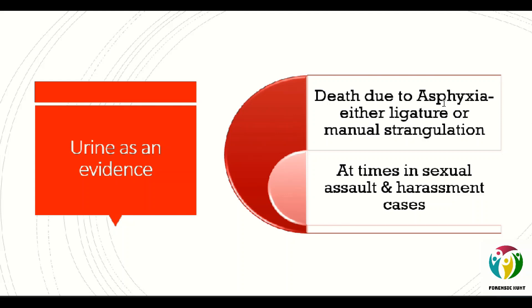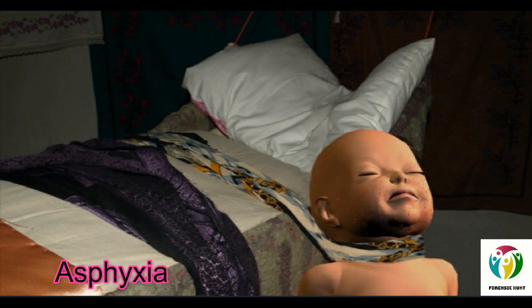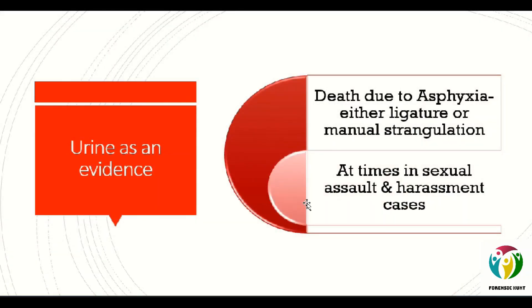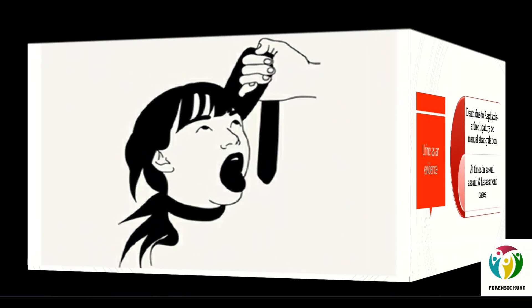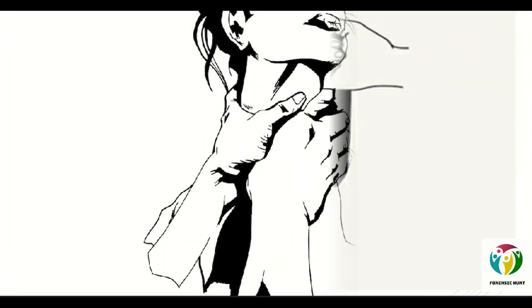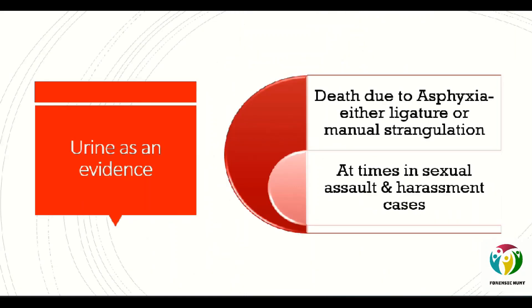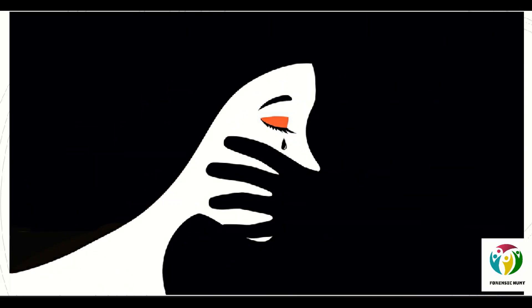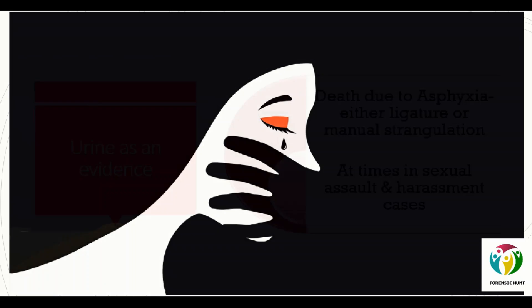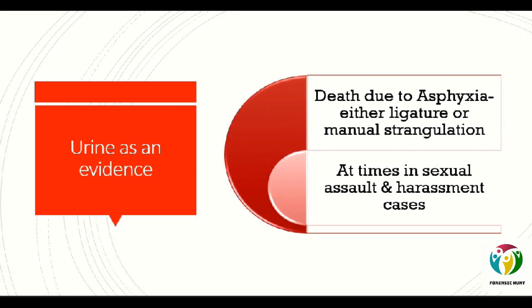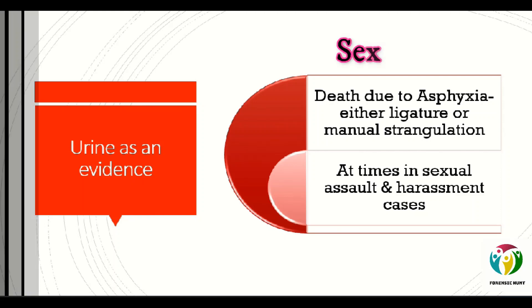Urine could be used as evidence in cases of asphyxial death. Asphyxia or asphyxiation is a condition of deficient supply of oxygen to the body that arises from abnormal breathing. These abnormal breathing conditions could occur in the case of a ligature, as in hanging, or in manual strangulation. The identification of urine stains can aid in the identification of homicides involving either ligature or manual strangulation. In these incidents, the strangulation victim involuntarily excretes urine prior to death, so the location of urine stains at the crime scene provides useful information to determine the site where the violence occurred.